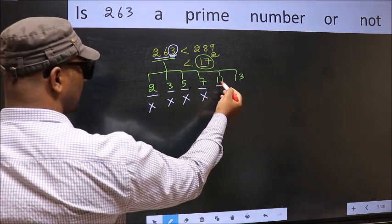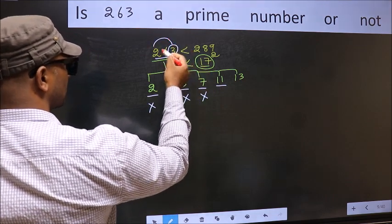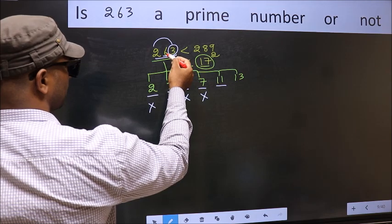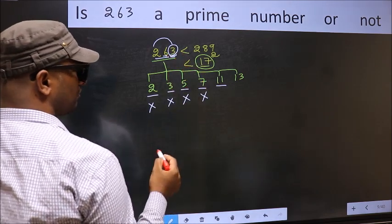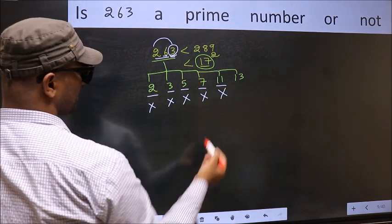Next, number 11. To check divisibility by 11, for that add alternate numbers: 2 plus 3 is 5. Now, 6 minus 5, we get 1. 1 is not divisible by 11. So, this number also not divisible by 11.